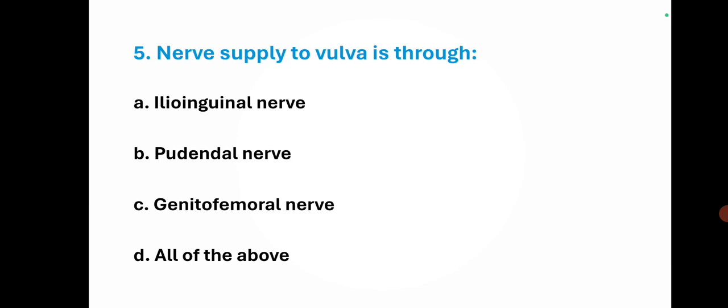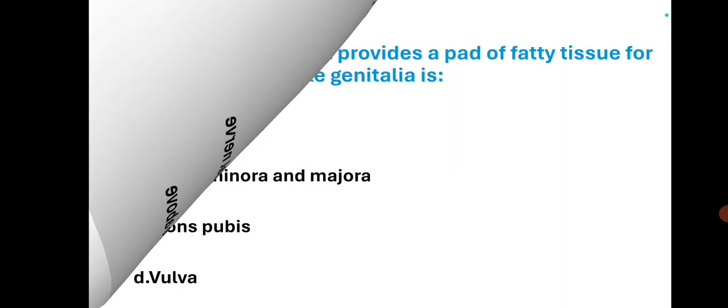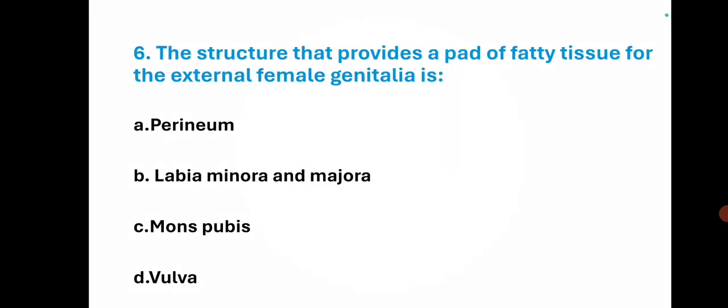Nerve supply to vulva is through — the right option is D — all of the above: ilioinguinal nerve, pudendal nerve, and genitofemoral nerve. The structure that provides a pad of fatty tissue for the external female genitalia is — the right option is C — mons pubis.